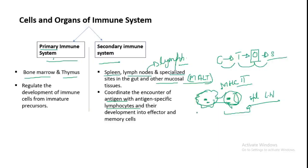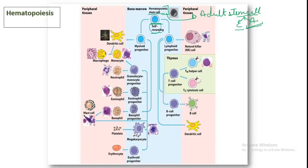The hematopoietic stem cell can commit to either the myeloid progenitor lineage or the lymphoid progenitor lineage. The myeloid progenitor is called the common myeloid-erythroid progenitor — M for myeloid and E for erythroid, since it also gives rise to RBCs. Whether the stem cell becomes myeloid or lymphoid depends on the environment and the body's needs.